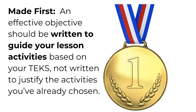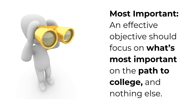For an objective to meet the 4M criteria, it must also be made first — before the activities. This is pretty difficult as a first-year teacher as you're trying to figure out what sorts of activities help students learn best. However, we must always keep the end in mind and remember that the objective should guide the learning tasks, not be written to justify a grab bag of activities. Finally, the objective and learning tasks in general should focus on what's most important on the path to post-secondary readiness and nothing else. We need to choose our activities and assessments carefully so that we're always pushing students toward the next step in their education.